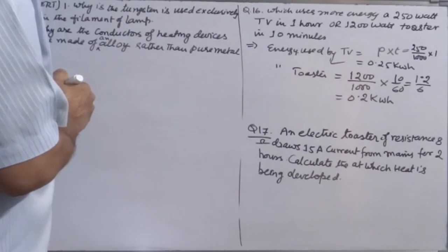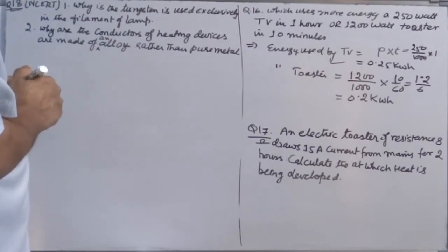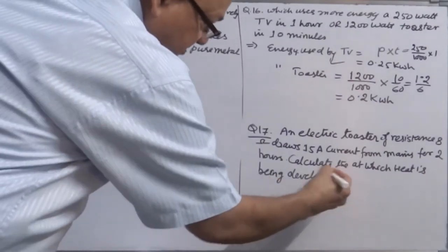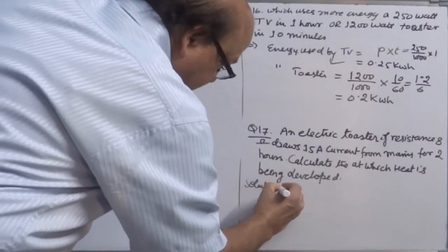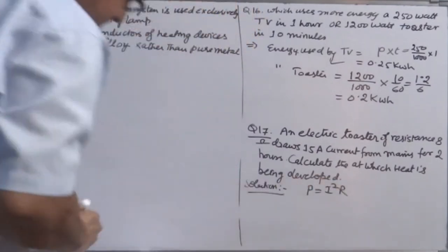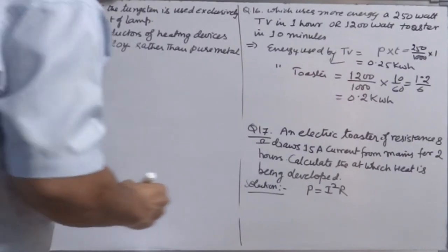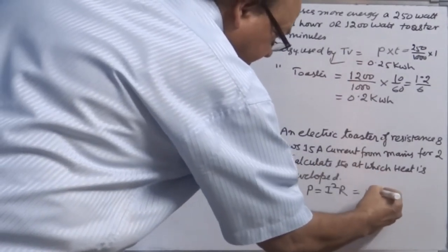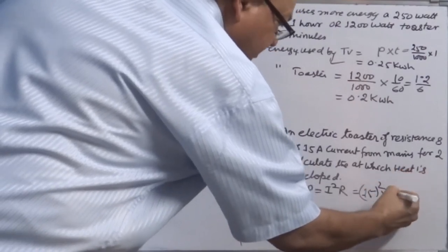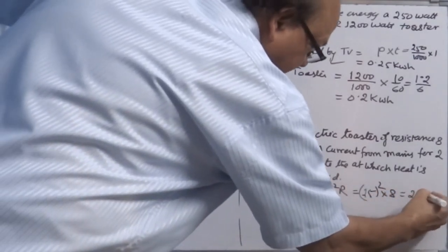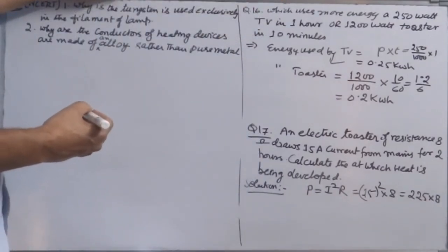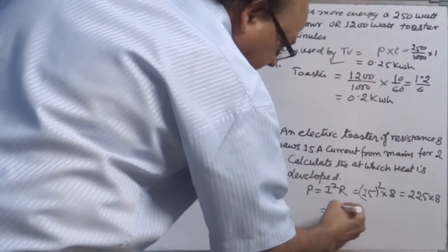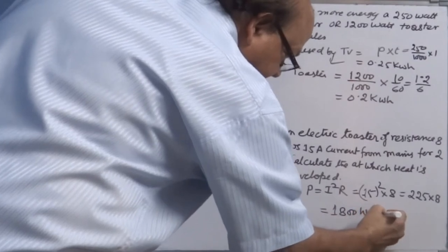Question number 17: An electric toaster of resistance 8 ohm draws 15 ampere current from the mains for 2 hours. Calculate the rate at which heat is being developed. Since rate is asked, we calculate power. P = I² × R = 15² × 8 = 225 × 8 = 1800 watt.